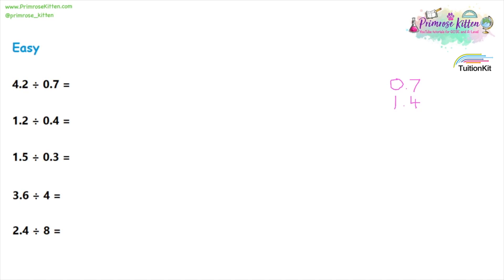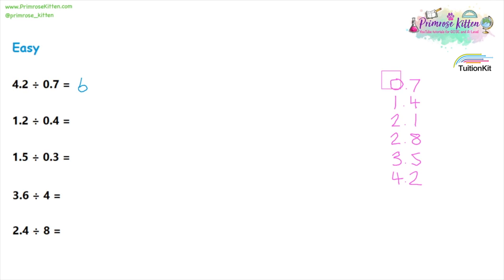Well, one 0.7 definitely does. Two 0.7s makes 1.4. Adding another 0.7 gives us 2.1. 2.1 is still smaller than 4.2 so we can identify that three fit in. Adding on another 0.7 we are up to 2.8. Another one gives us 3.5 and then another gives us 4.2. So altogether we have put exactly six 0.7s into 4.2, and that is the answer to question one.